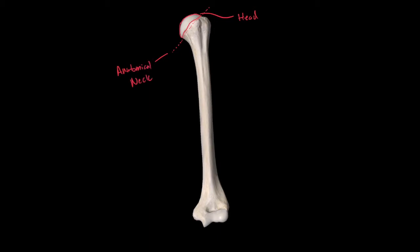Remember, narrowings in bones typically means it's going to be a neck. We have the anatomical neck and then a second narrowing — the surgical neck of the humerus. It's called the surgical neck because when people fracture their humerus it usually occurs in this region, so a lot of surgeries are performed here to repair the humerus.